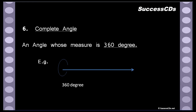In the same way, at this point I started making an angle and came in a circular way and stopped at the same point. The starting and ending point are both the same. Therefore, this is a complete angle with a measure of 360 degrees.